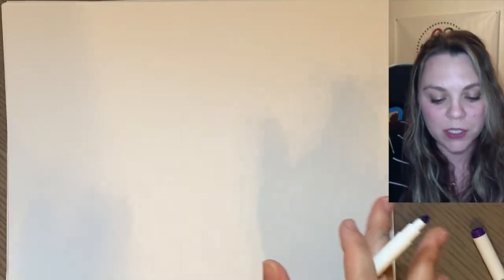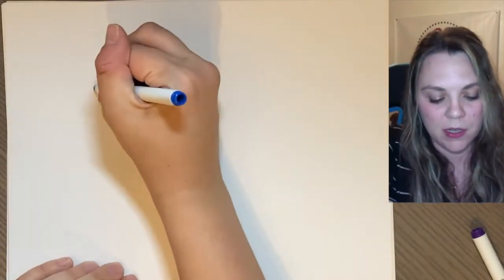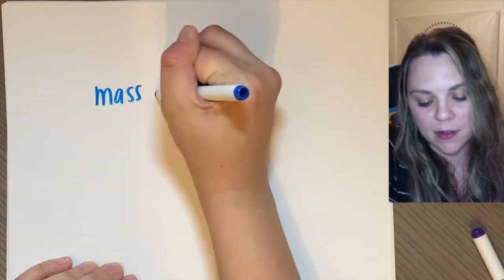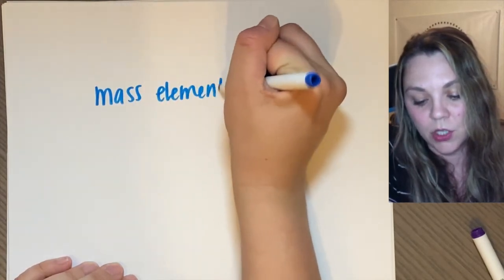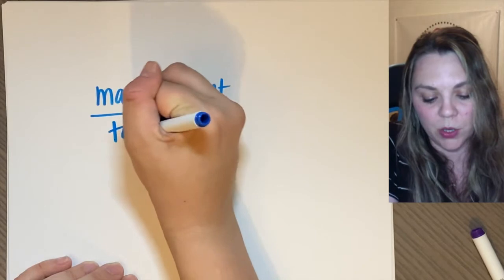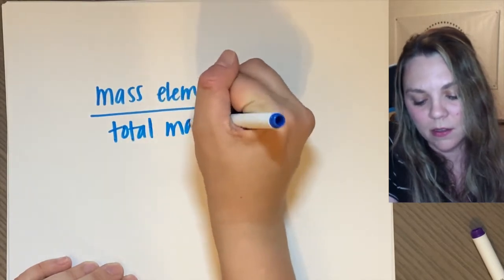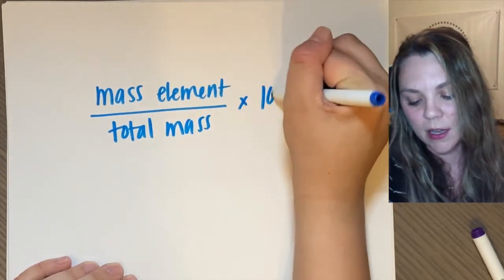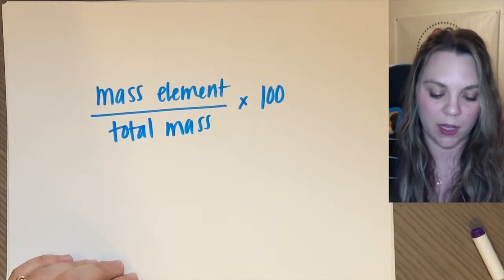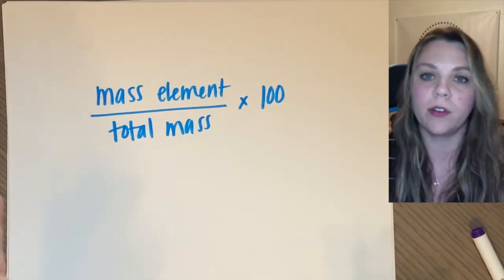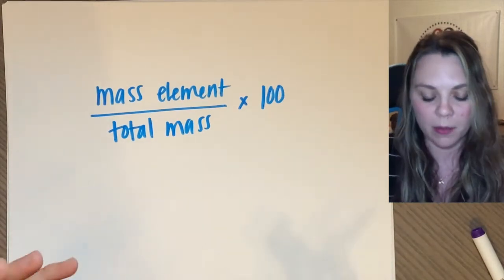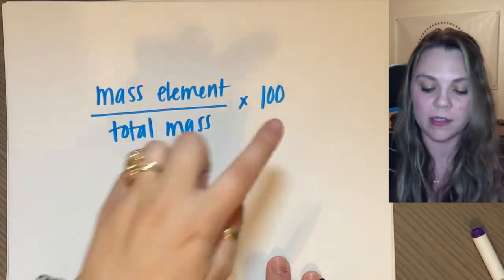All right, so the actual equation for percent composition is going to be the mass of the element you want divided by the total mass times 100. The mass of whatever element in that compound that you're talking about divided by total mass times 100.